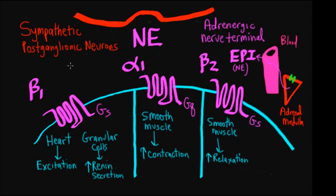On the left, we see beta-1. And beta-1 receptors are coupled to a GS protein that increases cyclic AMP and protein kinase A. And when you increase cyclic AMP and protein kinase A in the heart, it has an excitatory effect. It increases heart rate, it increases AV node conduction, and it increases contractility.